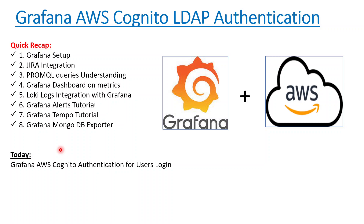Why has this topic been chosen? Whenever you install Grafana, you get an admin user ID, but you cannot give that admin user ID to everyone because it has full access to the Grafana URLs. So what you do is create different kinds of users — viewer, editor, and admin — and then manage the entire authentication process using either open source LDAP or AWS or Azure LDAP.